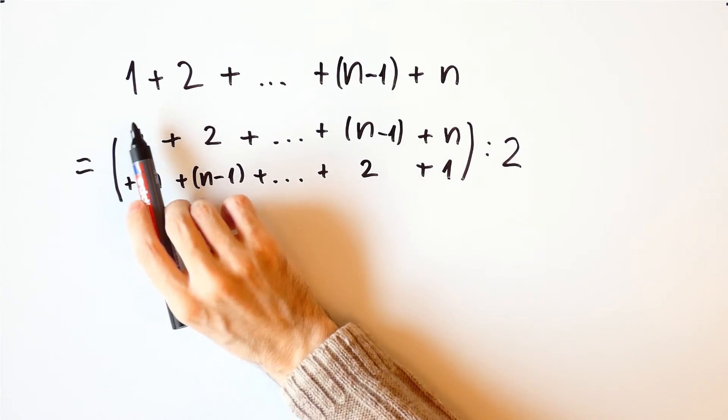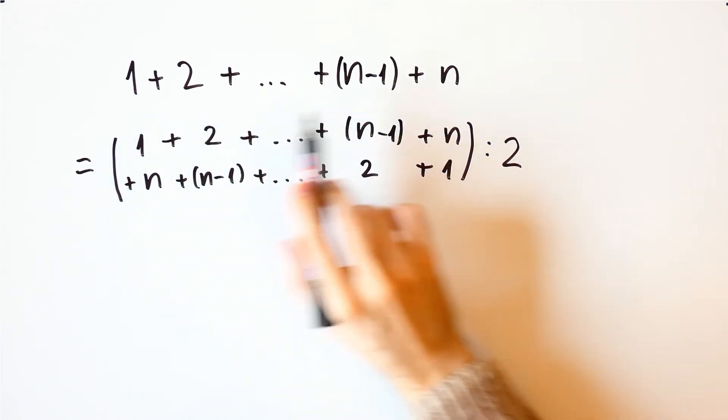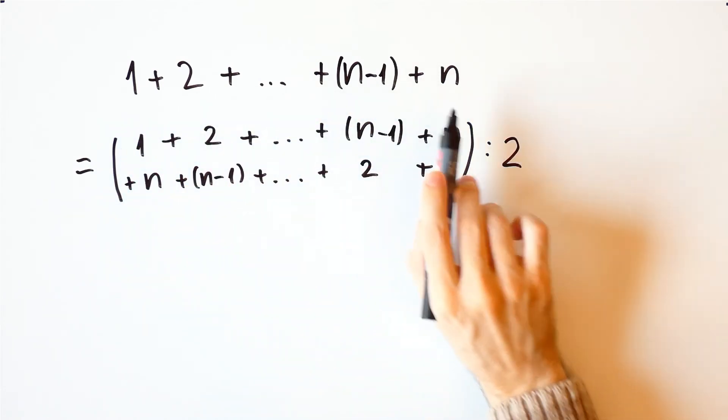We can also do this for the sum of the first n numbers. We'll add each number twice and then divide by 2.